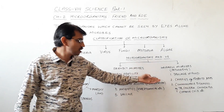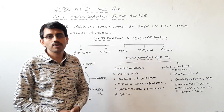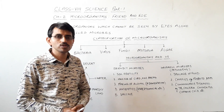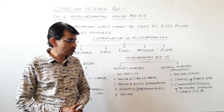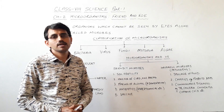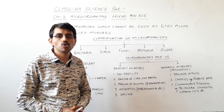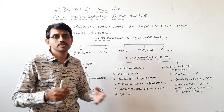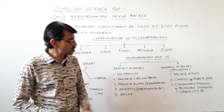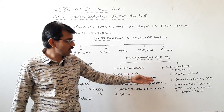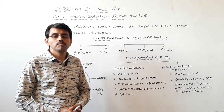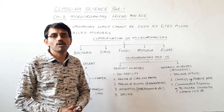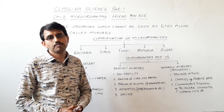Pathogenic micro-organisms are the cause of a number of communicable diseases like TB (tuberculosis), cholera, chicken pox, common cold, and the very common COVID-19, which is also caused by a virus. These diseases are called communicable because they spread from an infected person to a healthy person.